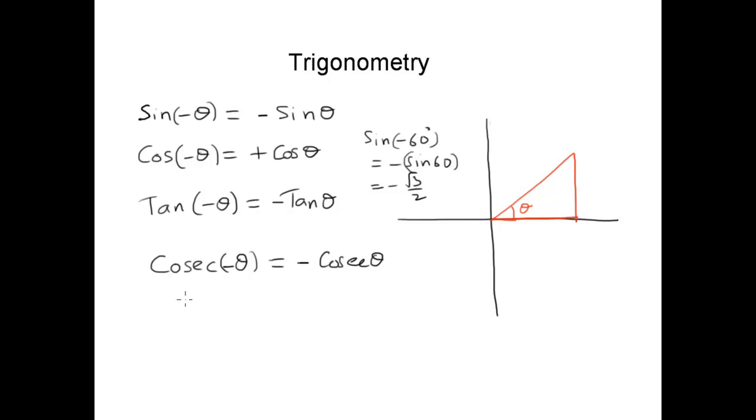Right. How about secant theta? Secant of minus theta. Right. Cosecant is 1 over cos theta. If cos theta is positive, no matter what your angle is, then this will also be positive.